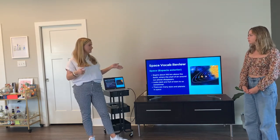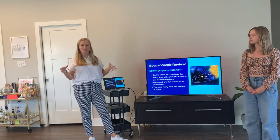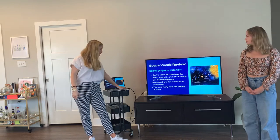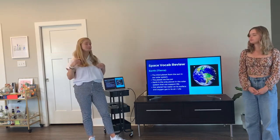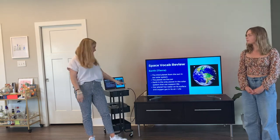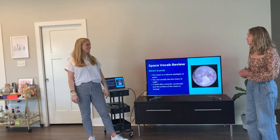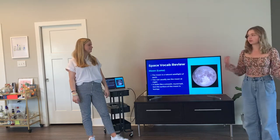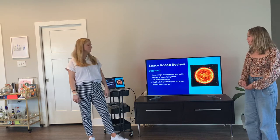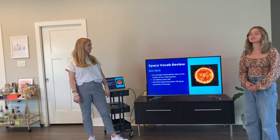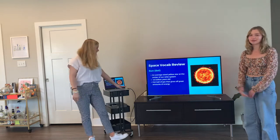Let's talk about space. Space begins about 100 kilometers above the Earth where the shallow air around the Earth disappears. We've also been learning about Earth, the planet that we live on — it's the third planet from the Sun in our solar system. And then we have our Moon, which is a natural satellite that revolves around Earth. And then we have our Sun, an average-size yellow star at the center of our solar system.